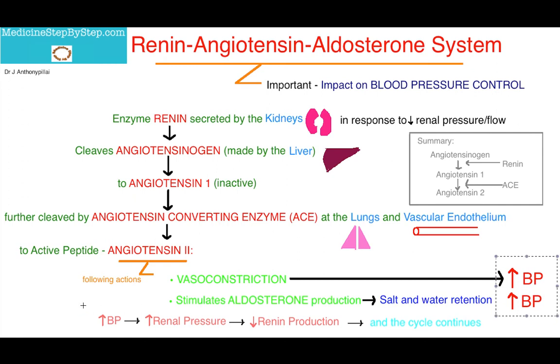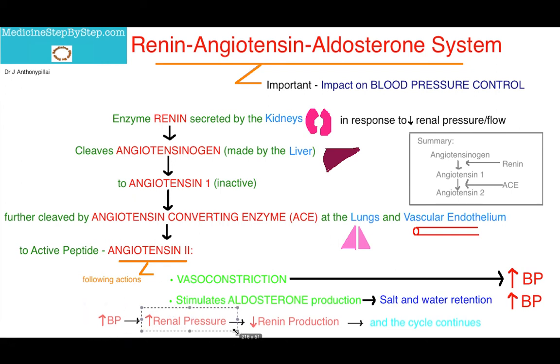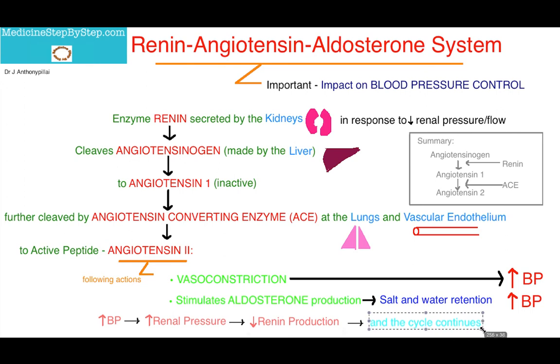This is, of course, a cycle, and so with an increase in blood pressure, there's an increase in renal pressure, and so a reduction in renin production, and the cycle continues.